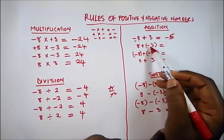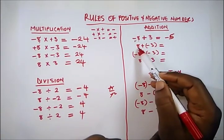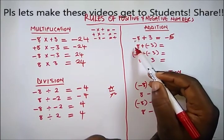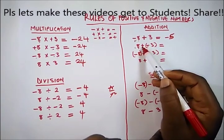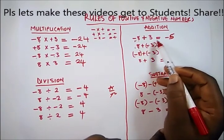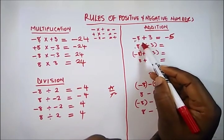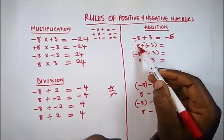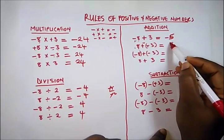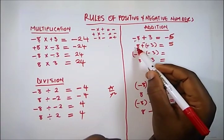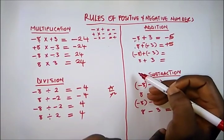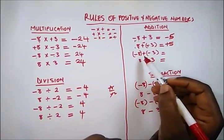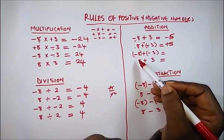Here we have 8 and minus 3. When you open this bracket, it turns to a negative, so it becomes 8 minus 3, which is 5. The sign of the biggest number is plus, so the answer is positive 5.